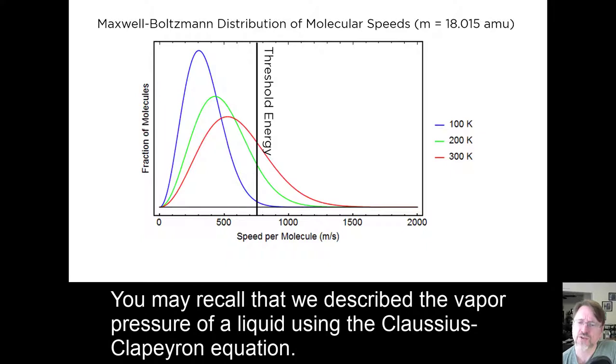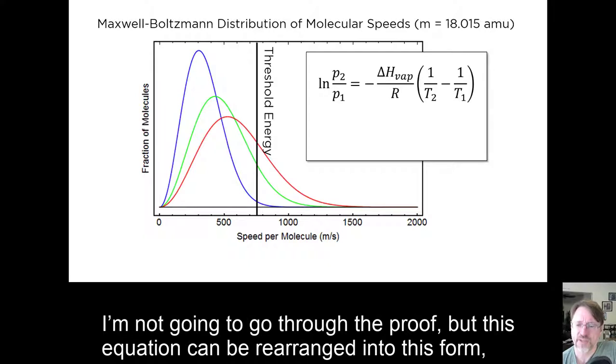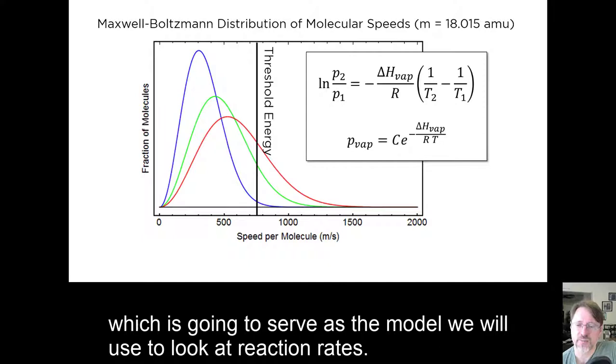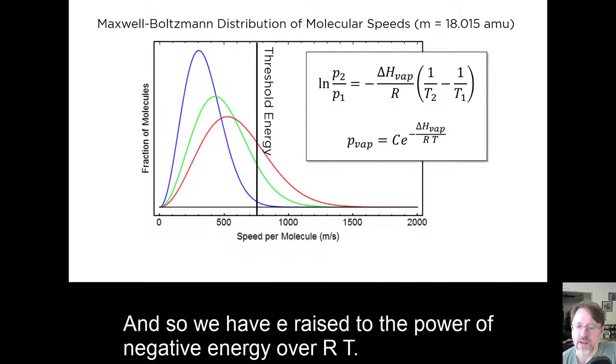You may recall that we described the vapor pressure of a liquid using the Clausius-Clapeyron equation. I'm not going to go through the proof, but this equation can be rearranged into this form, which is going to serve as the model we will use to look at reaction rates. The idea in this version is that we have folded the information on a reference vapor pressure, say the boiling point, into the constant C. And so, we have E raised to the power of negative energy over RT.